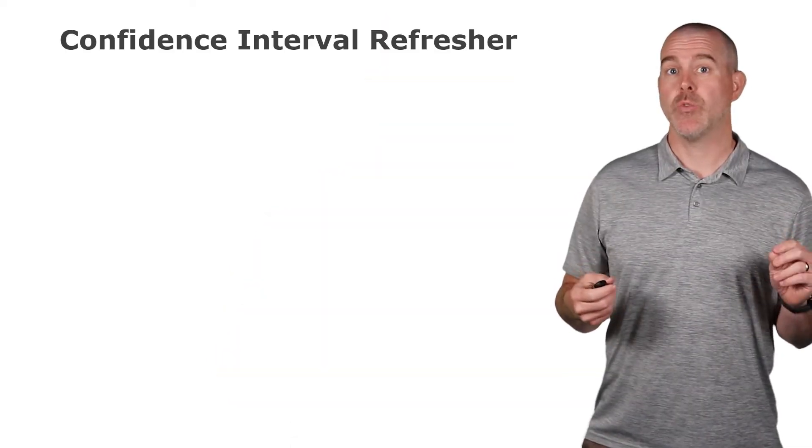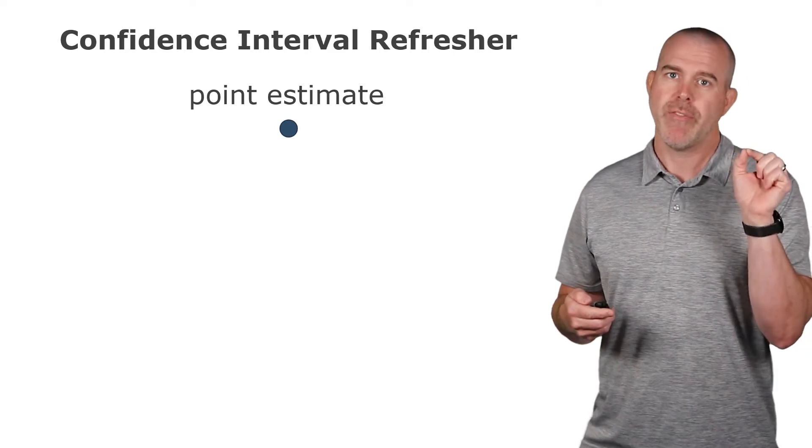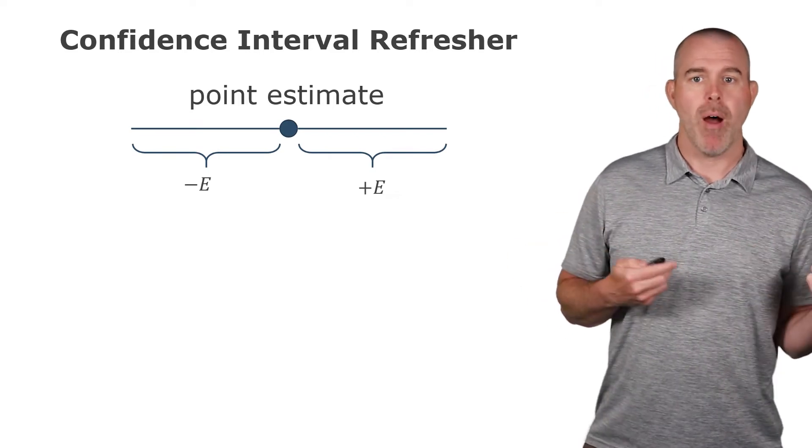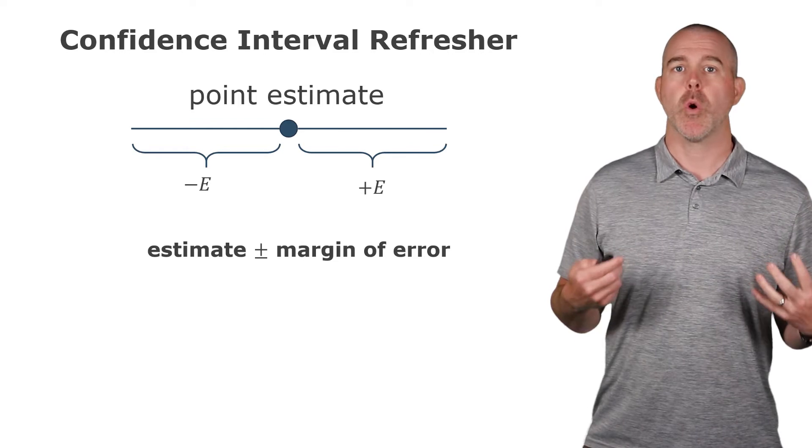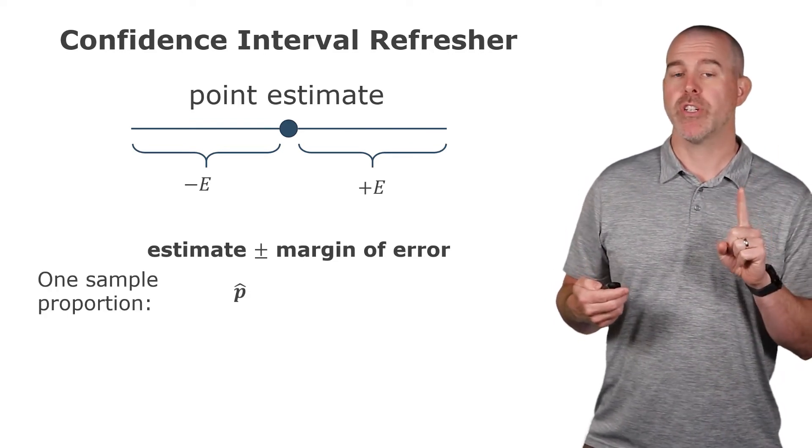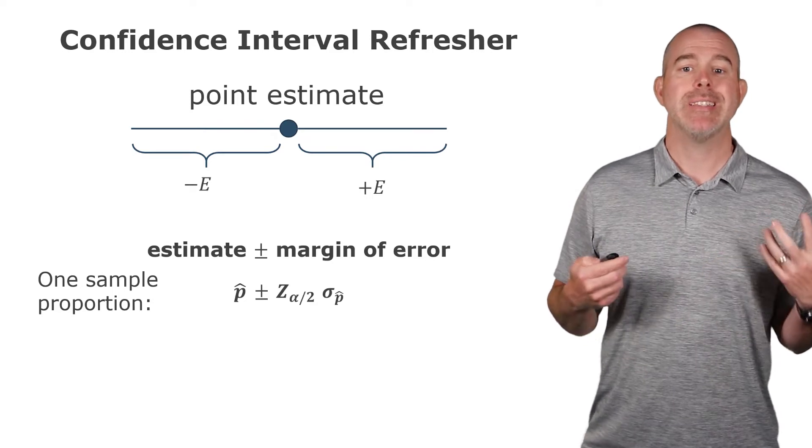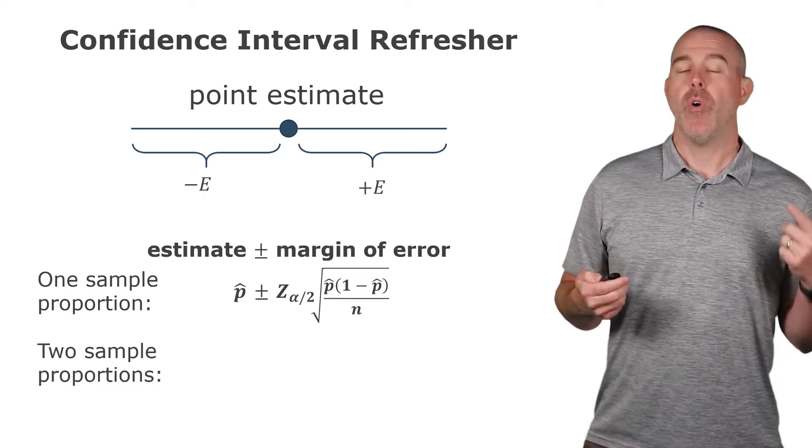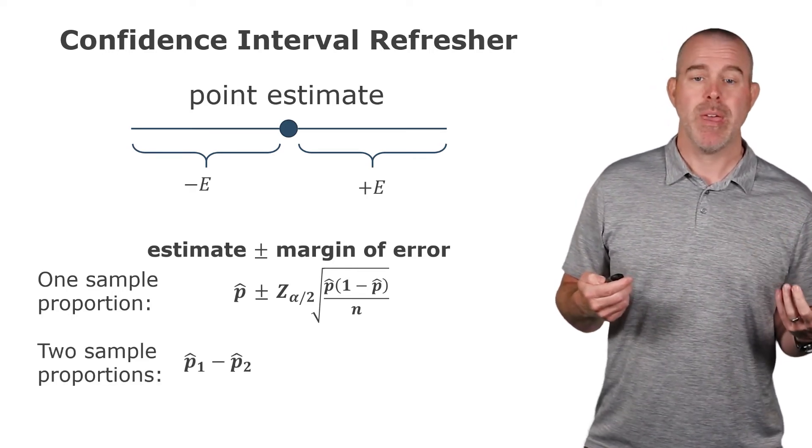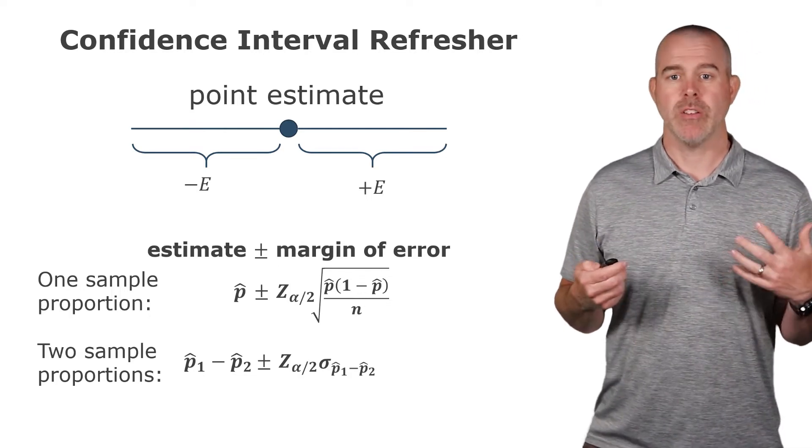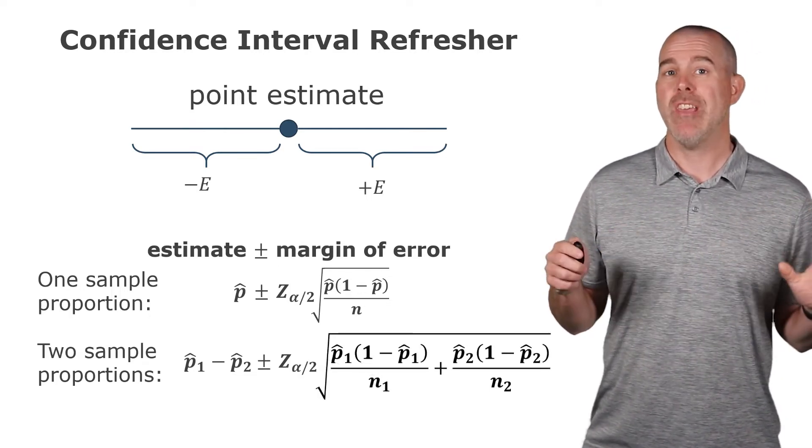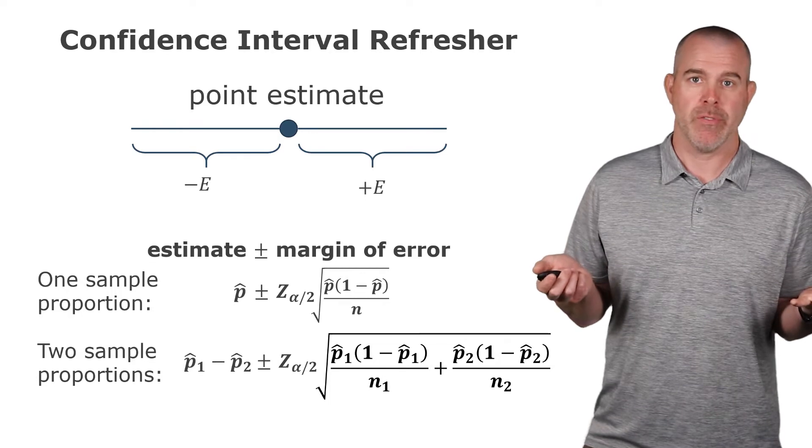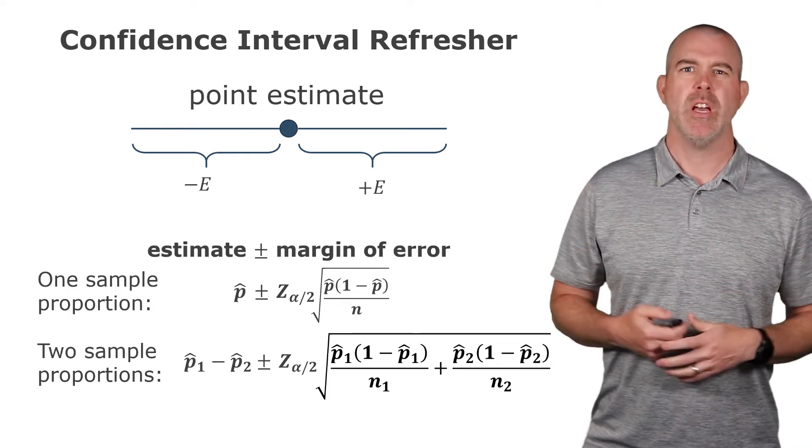We can also investigate this with confidence intervals. So reminder, confidence intervals, you have your estimate in the middle. And then for certain variables, there's a symmetric distribution where you get a margin of error on either side. So you have your estimate plus or minus your margin of error. For a one sample proportion, we had p hat would be our estimate plus or minus z alpha over two times the standard deviation. For two sample proportions, it'll be similar p one hat minus p two hat. We have our z times the standard deviation. And unfortunately, we can't use the pooled one here, because in the confidence interval, we're not assuming they're equal, we're going to do a confidence interval for the difference. So we have to use the full standard deviation here.